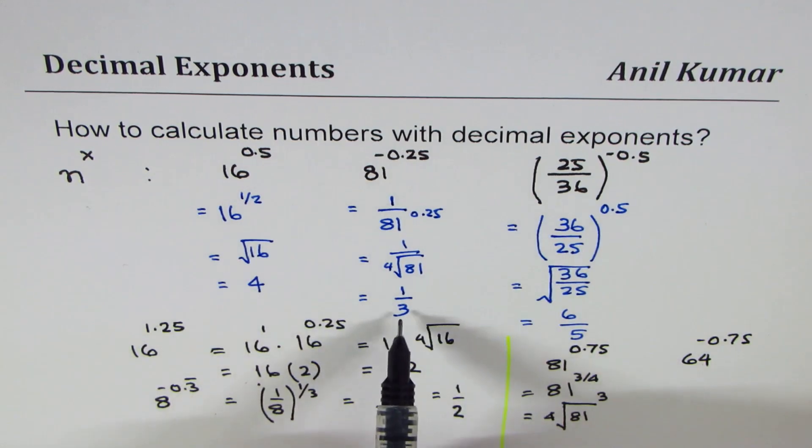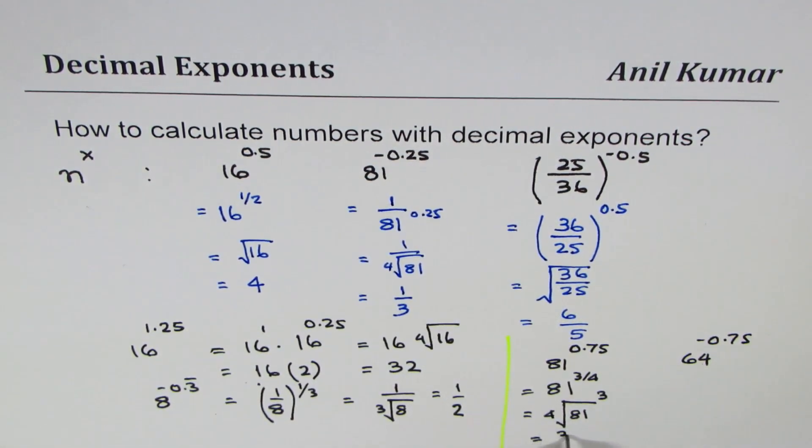That really means fourth root of 81 and then cube it. Fourth root of 81 is actually 3, and cube of 3 is 27, so the answer here is 27.